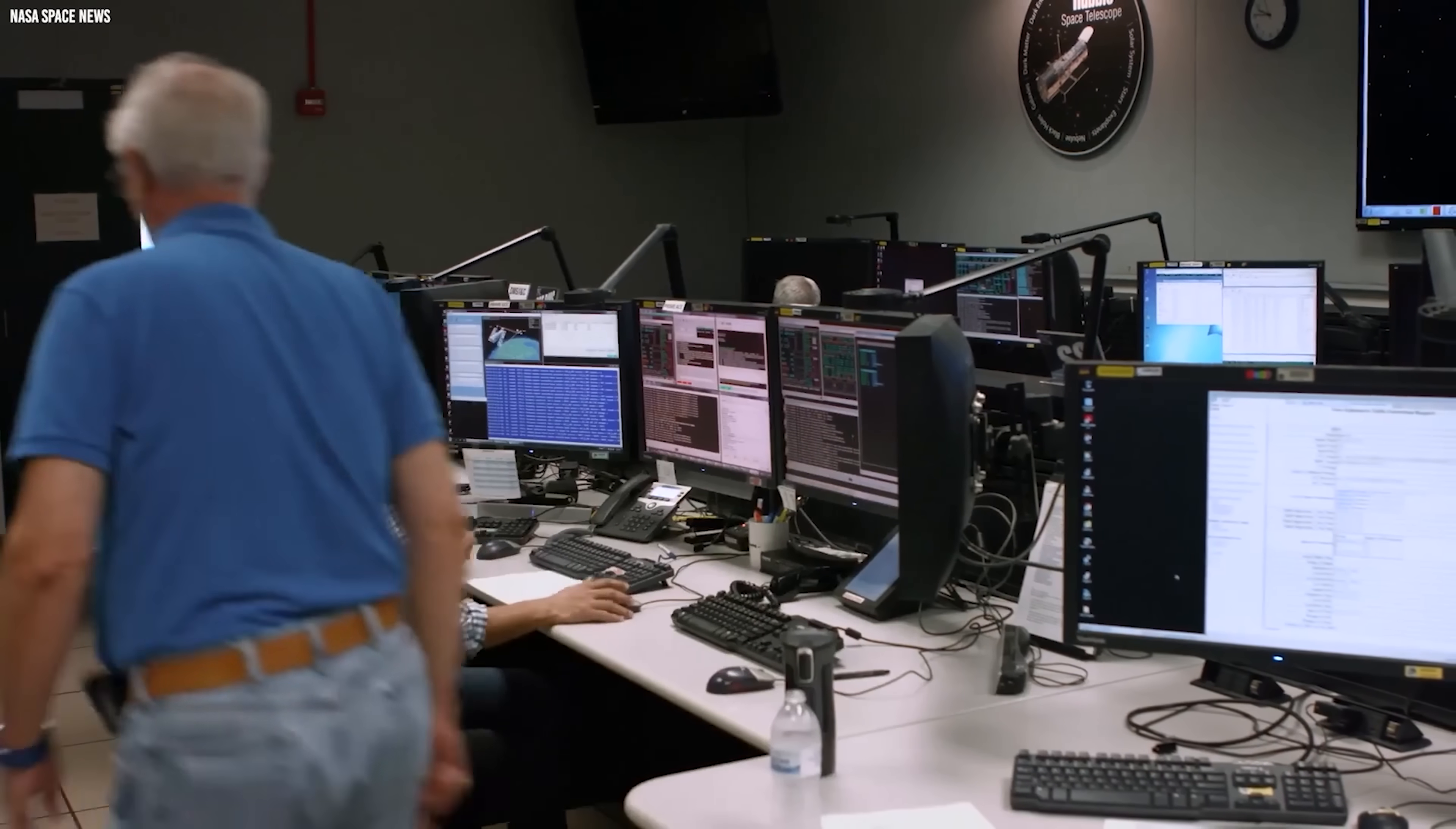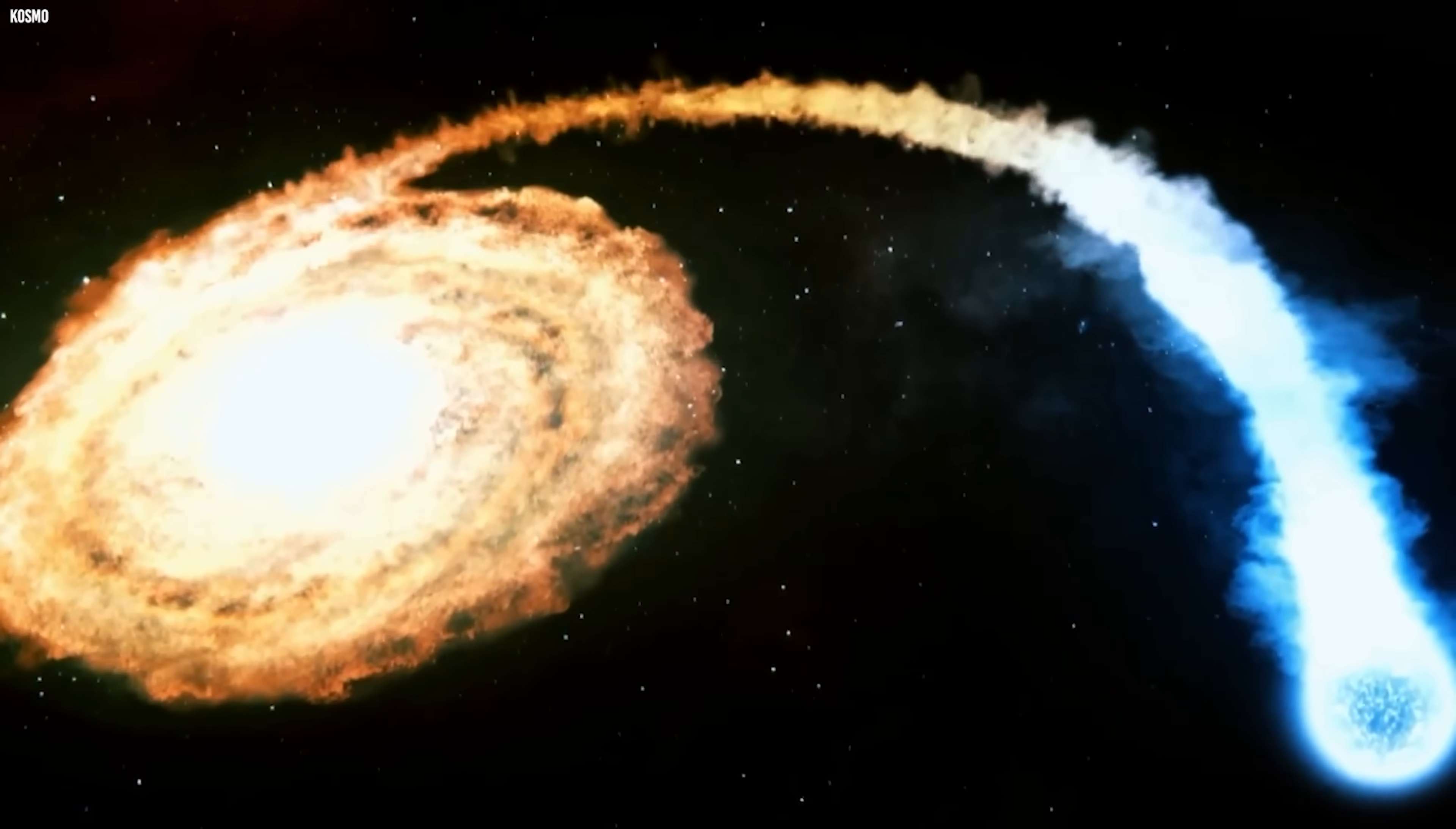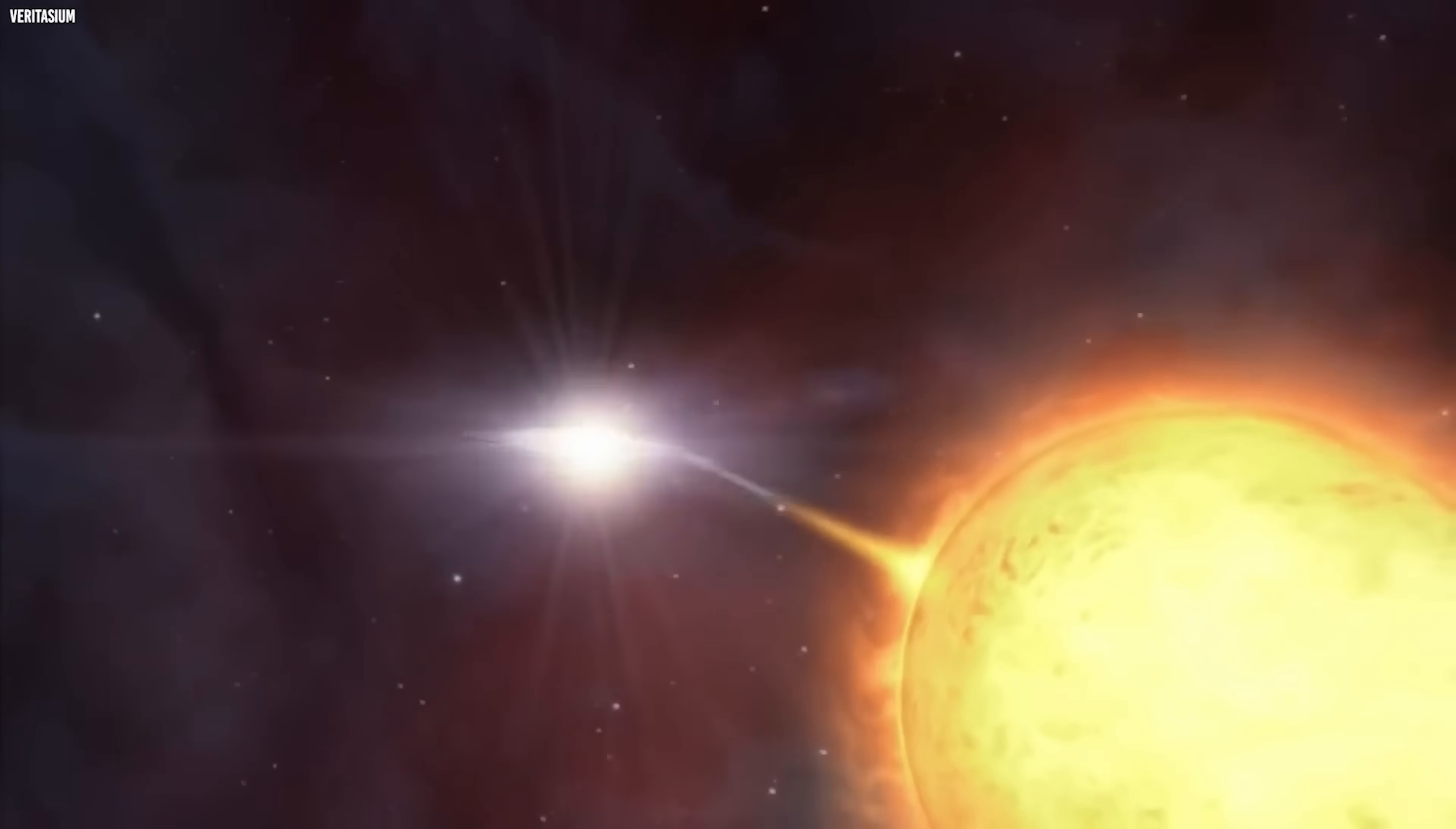The team also confirmed something astronomers had long suspected but never nailed down: a vast disk of gas encircling both stars. This shared envelope proves that matter isn't just falling inward, it's also being flung outward in large amounts. Stretching far beyond the gap between the two stars, the disk tells a story of sustained loss rather than a single outburst. That realization changes how we see V. Sagittae.